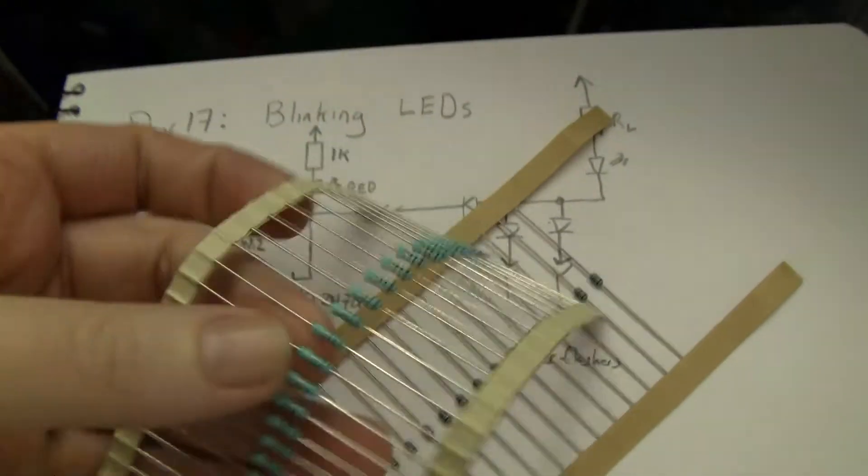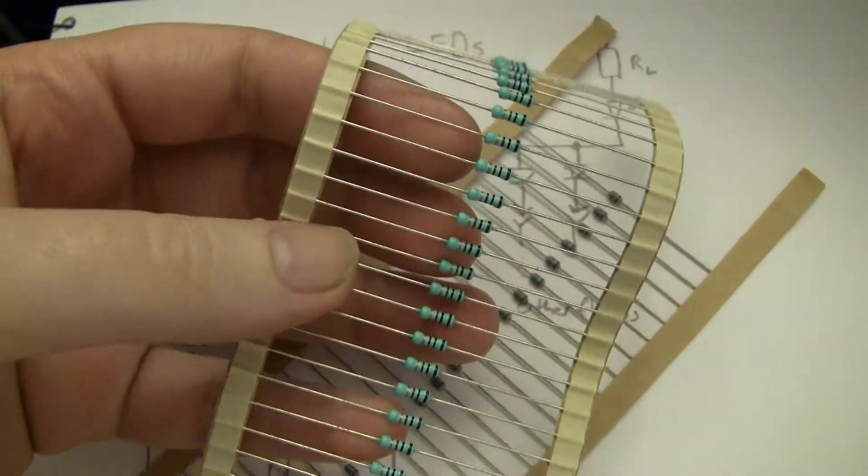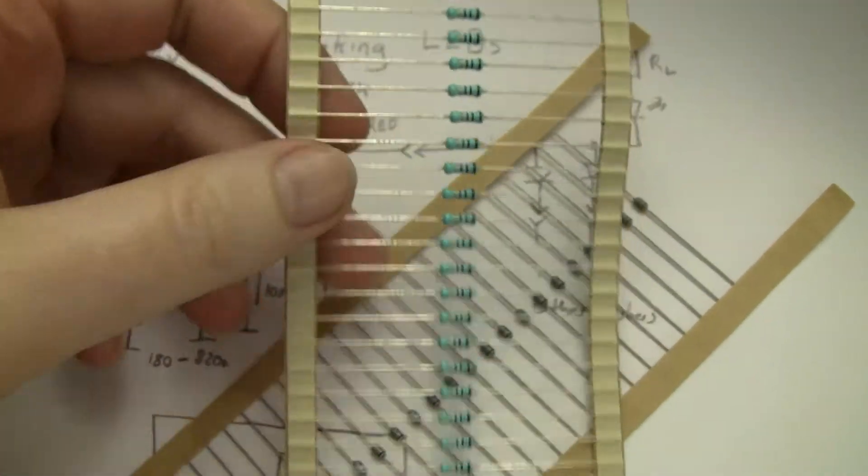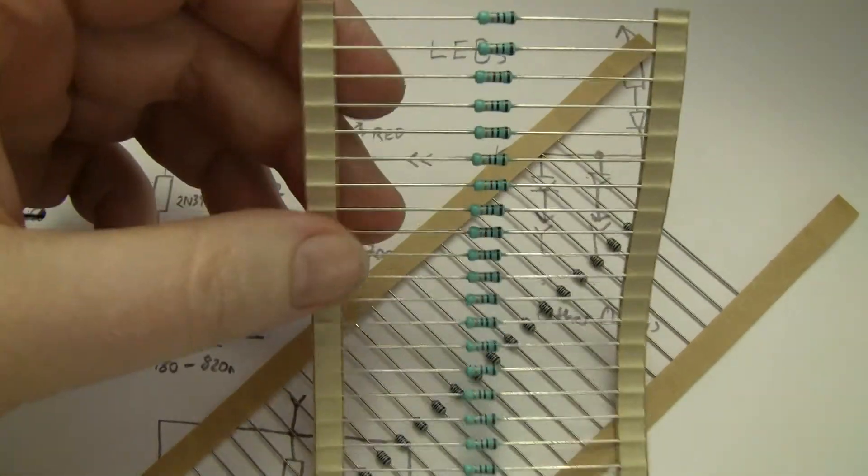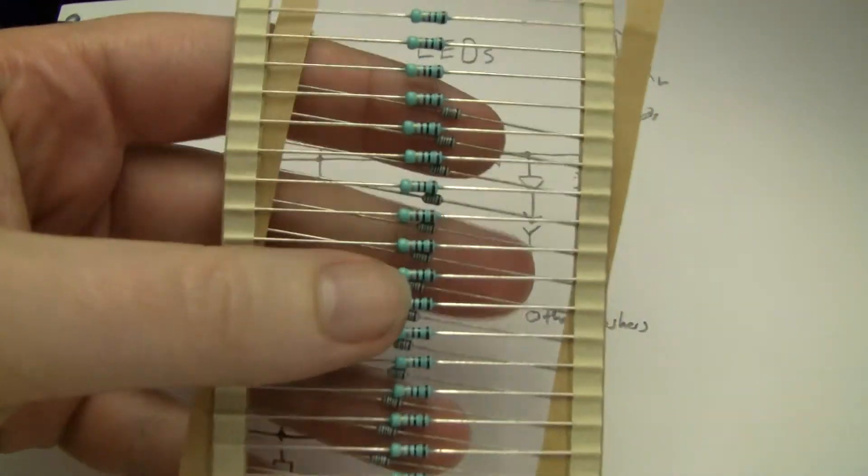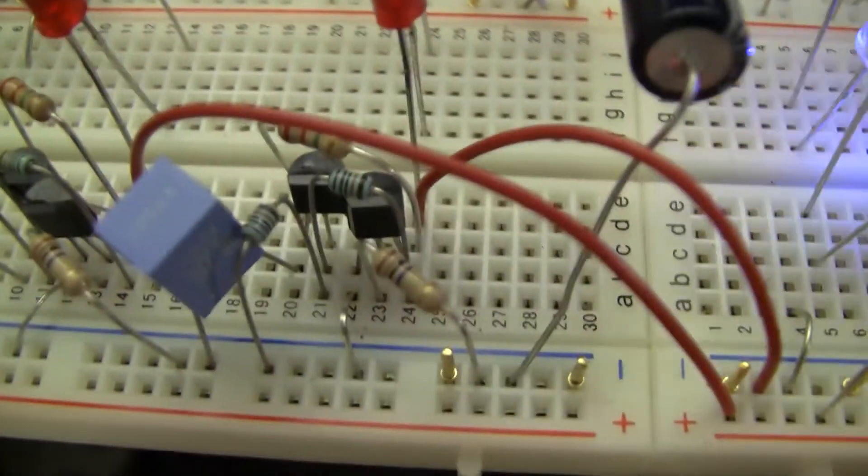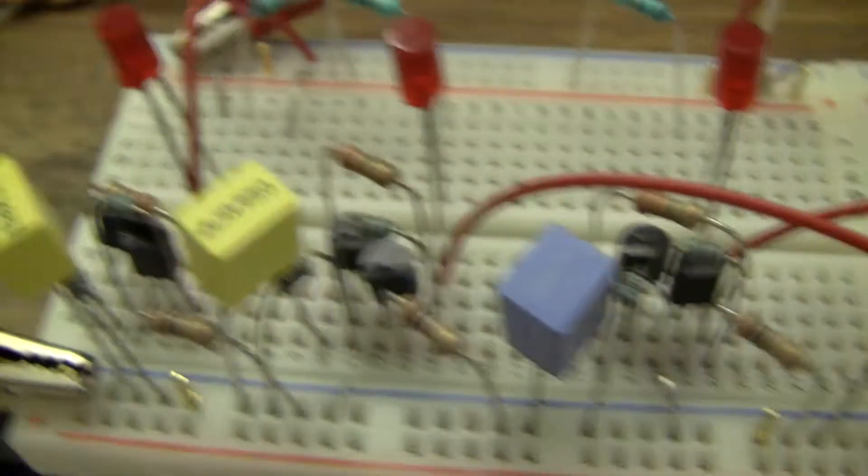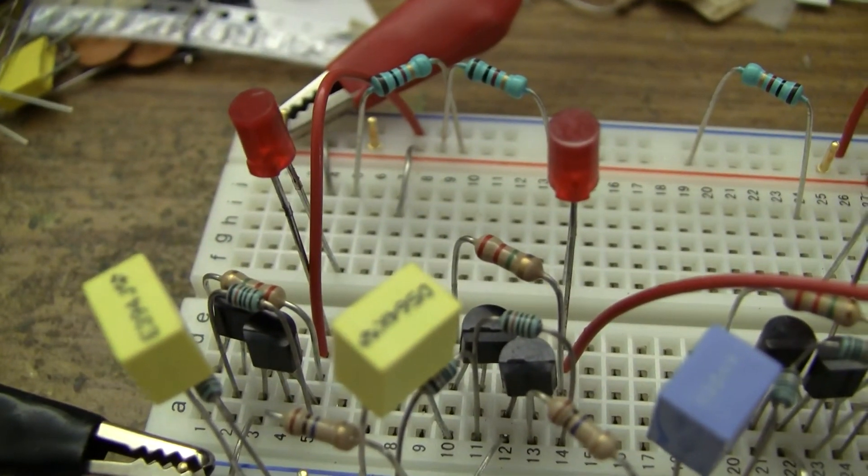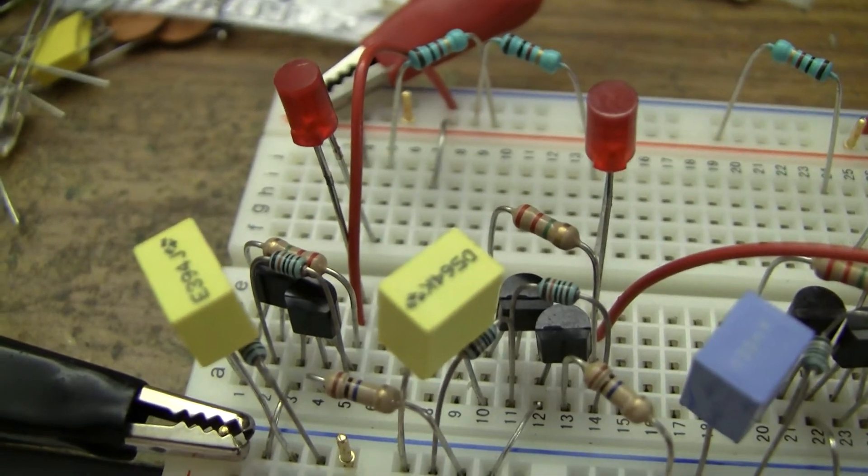Similarly I chose the 1k because it was an appropriate value and also because it's green. So if I'm going to build these things dead bug or just point to point, using the component value components as part of the color of the device is always kind of cute. Note also that the particular value I've used there, 2meg2, has a red red green color code, which is again kind of appropriate for the season.